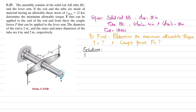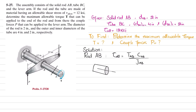For rod AB, the allowable shear stress formula is: τ_allowable = T_AB · c_AB / J_AB. We will cut the rod at a section — this is the rod, this is the axis, and there is torque T applied here at point A. At the cut section, by equilibrium, the internal torque T_AB is equal to T.